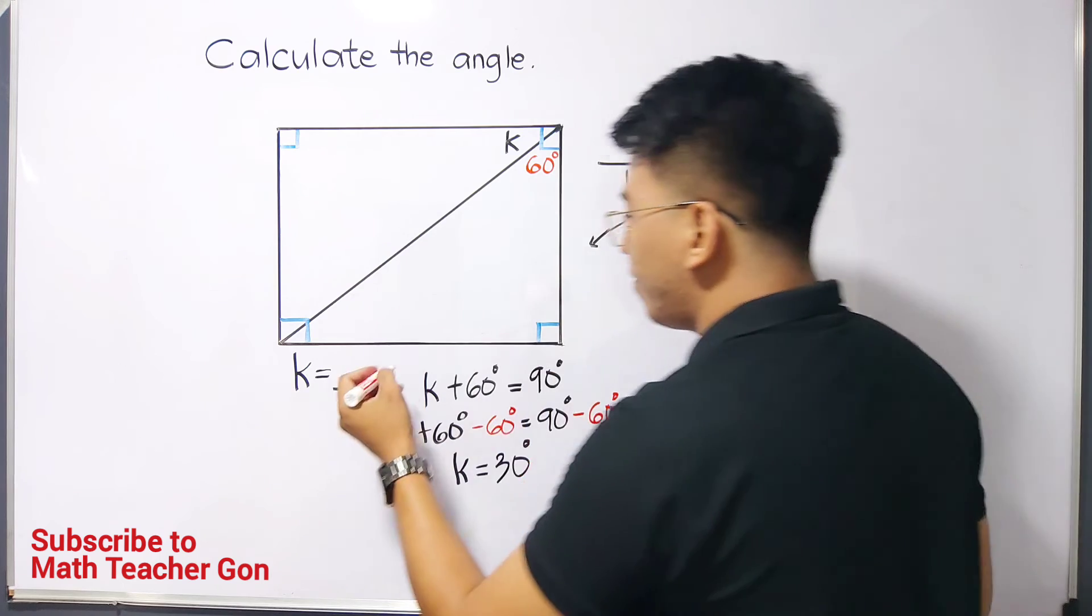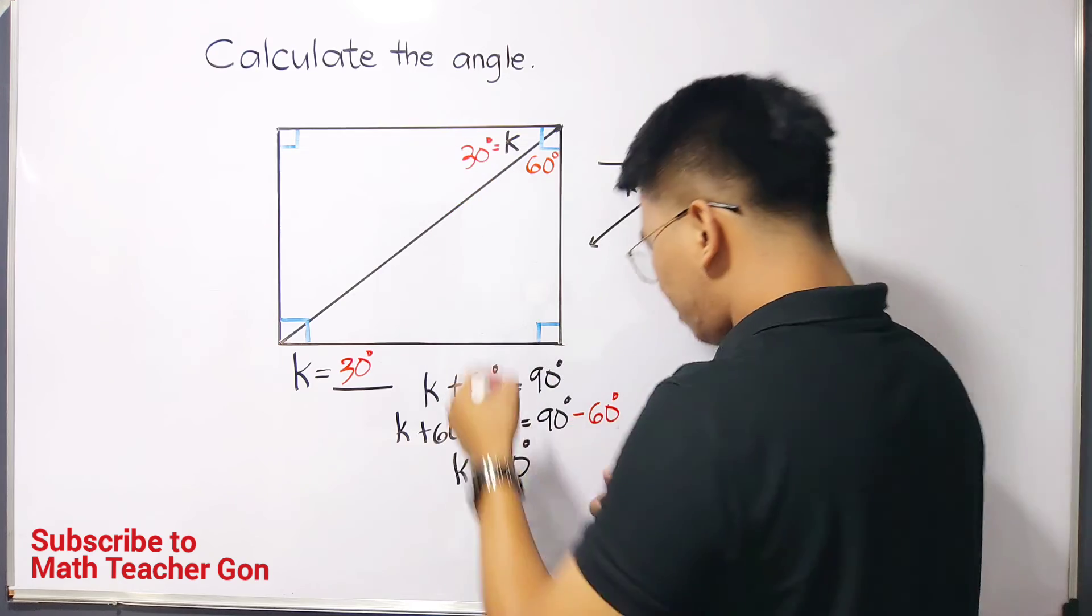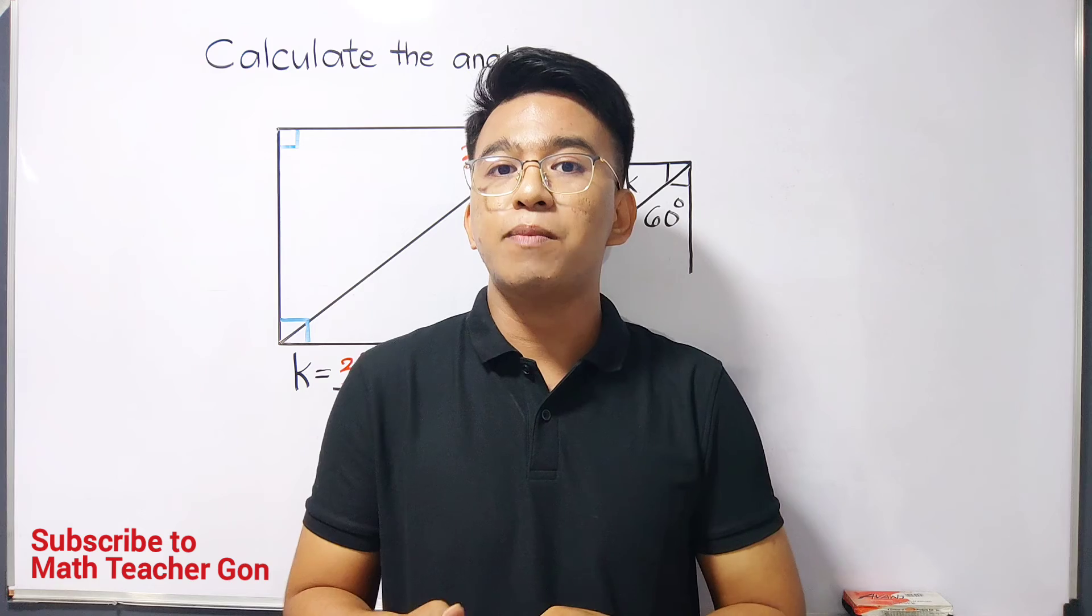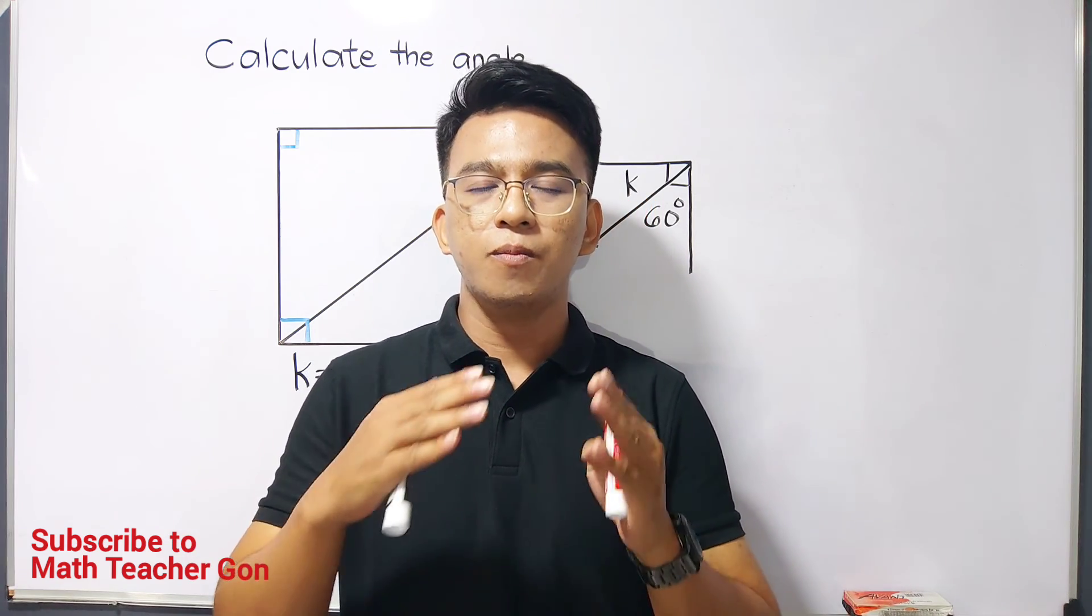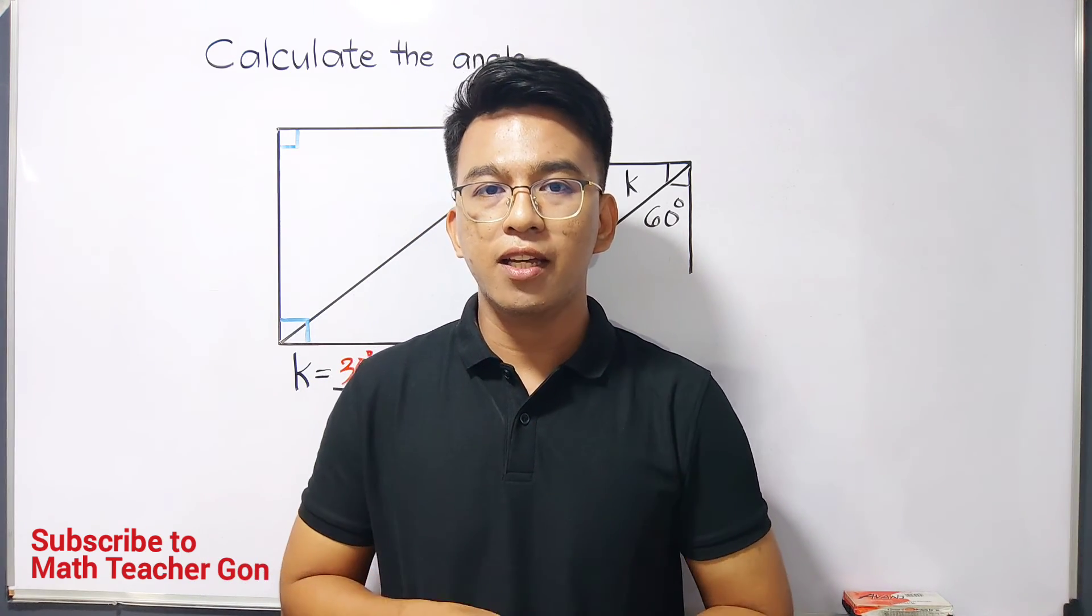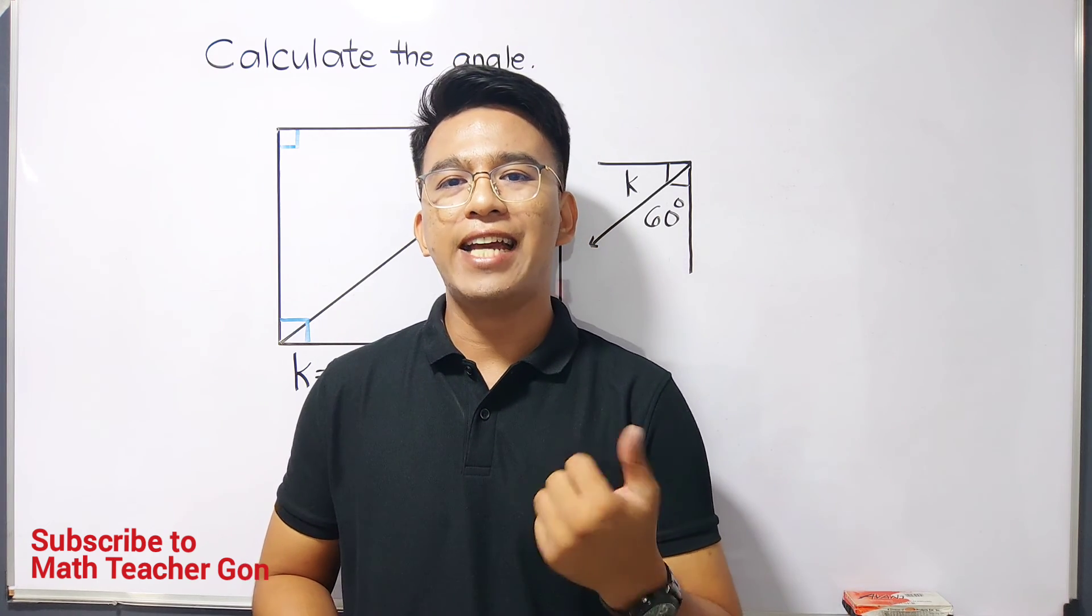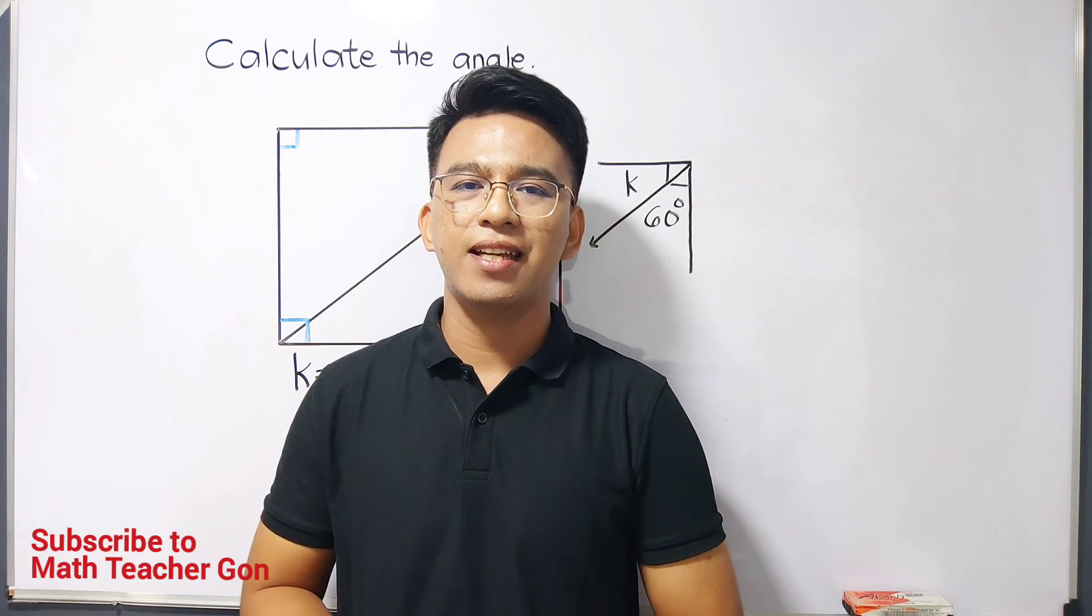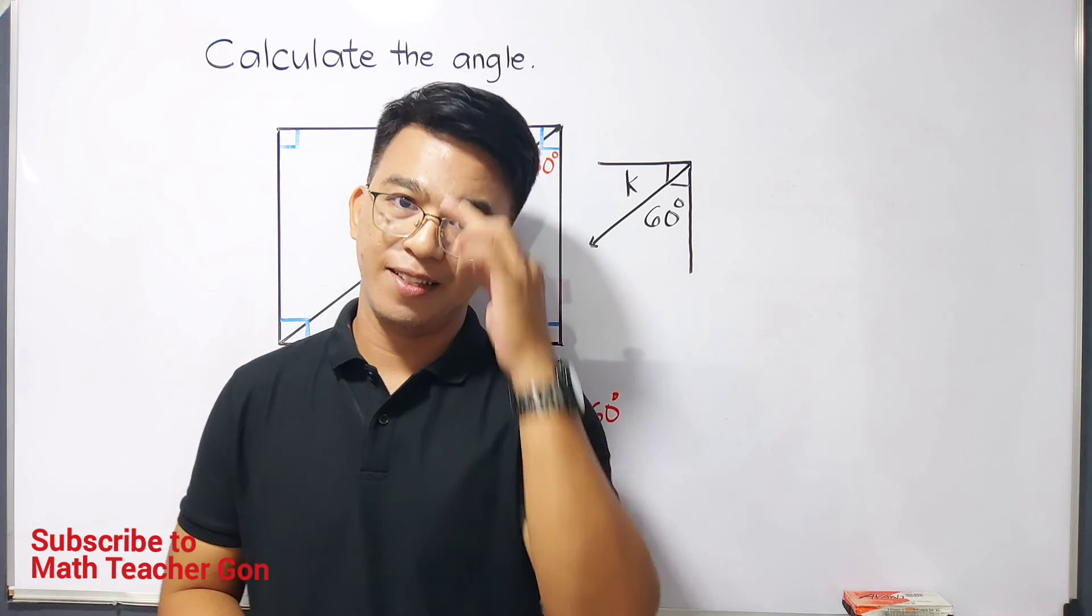Now as you can see the value of k in this given problem is simply 30 degrees. So I hope guys na you learned something from this video on how to calculate a specific value of an angle given these geometric figures. So if you have any question about this you can comment down below and feel free to share this video. So if you're new to my channel don't forget to like and subscribe and hit the button for you to be updated sa latest uploads. Again it's me teacher gone marami marami salamat bye.